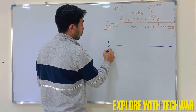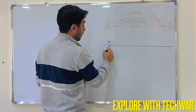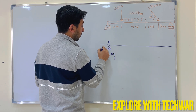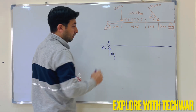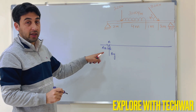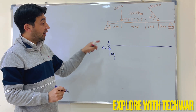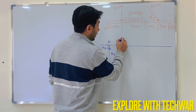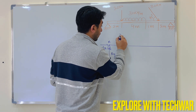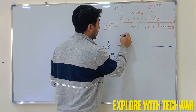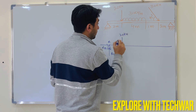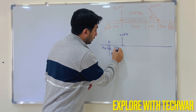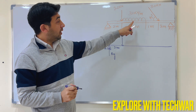To redraw the diagram: we have our pin support here — let's say this is point A. At point A we will have an Ay reaction and an Ax reaction. My assumption is upward and rightward. We have a 20 kilo newton load here at 2 meters.